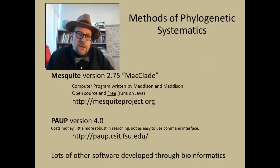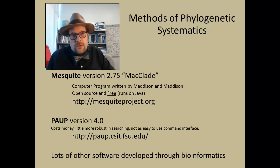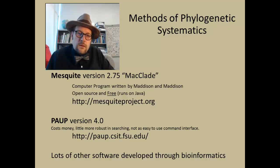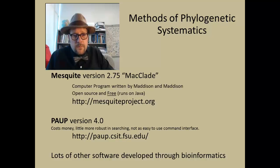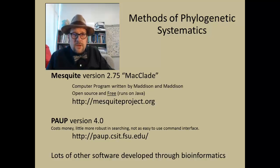There are two software programs used frequently in phylogenetic systematics. The first is Mesquite, an offshoot of an older program called MacClade designed for old Apple computers. The new version runs using Java, is open source and free, and can run on any computer that runs Java including Linux. The other program is PAUP, which hasn't been updated as frequently, costs money, is very powerful, and runs on Windows machines with a really good search algorithm.